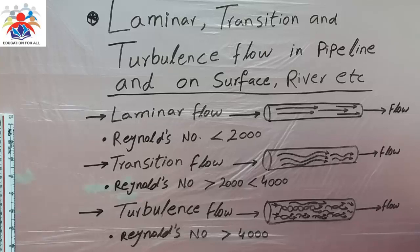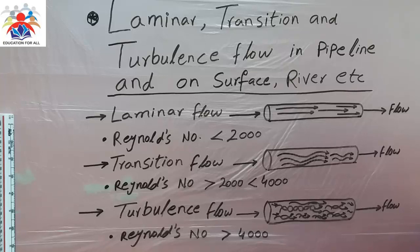Hello and welcome to my YouTube channel. In this video I'm going to explain types of flow. In a pipeline, riverbed, or canal bed, we have mainly three types of flow: laminar, transition, and turbulence flow.